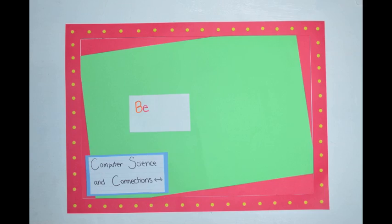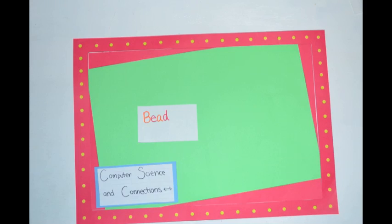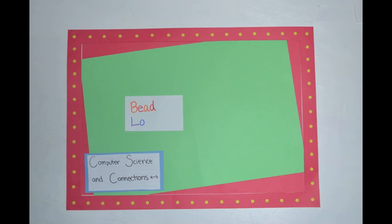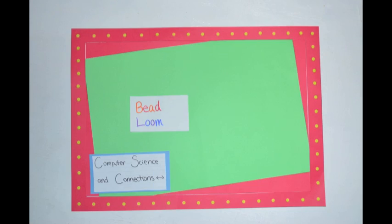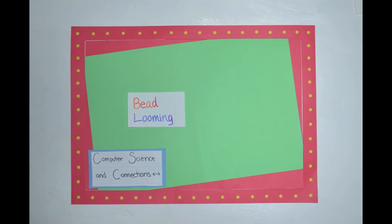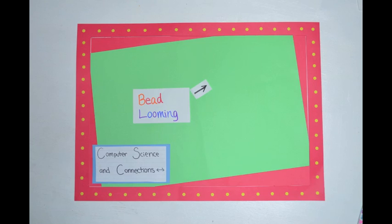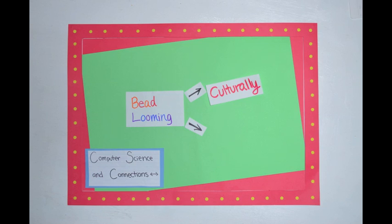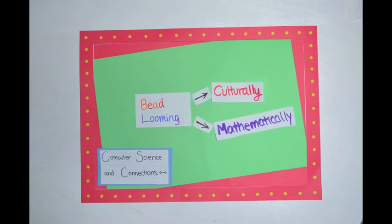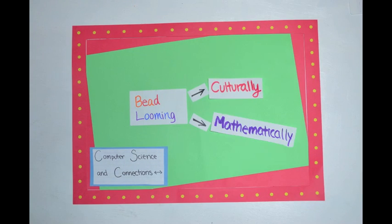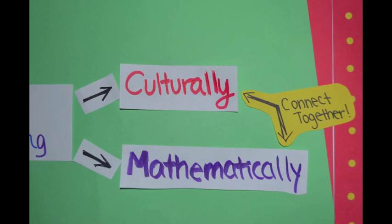There are two main aspects that connect to bead looming. The first is culturally, as it comes from the Native American bead works. It also relates to mathematics because of the Cartesian plane base it uses.